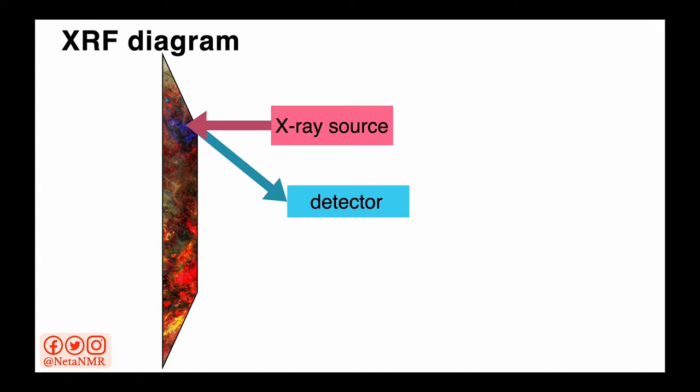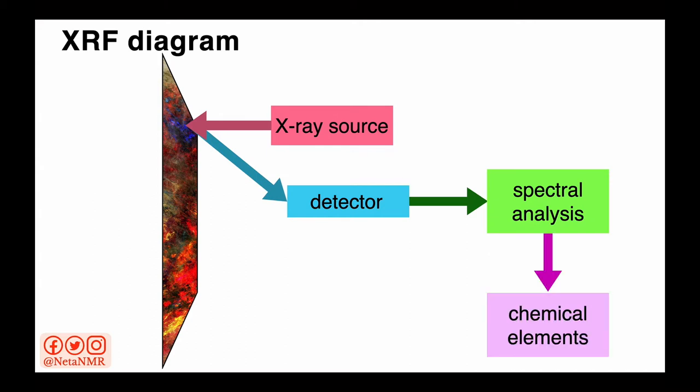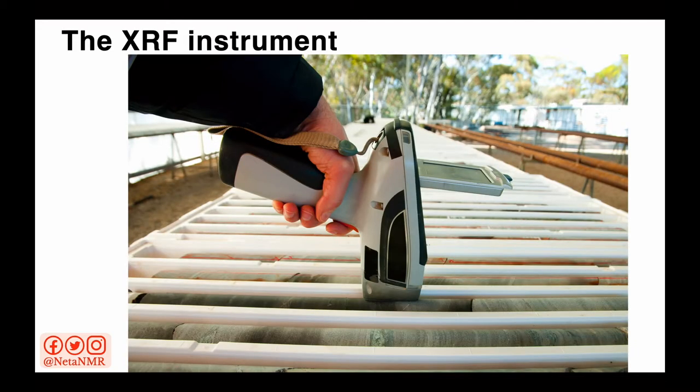What we're recording is the X-ray fluorescence, and we'll see exactly what that is in a few seconds. This recorded signal is then analyzed, and after the analysis, we can find out which chemical elements are present in the sample.